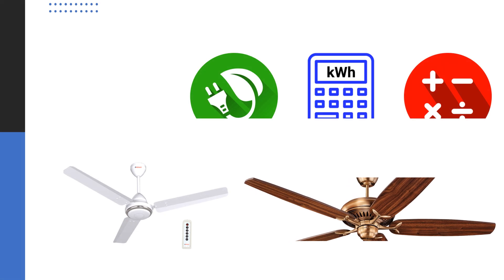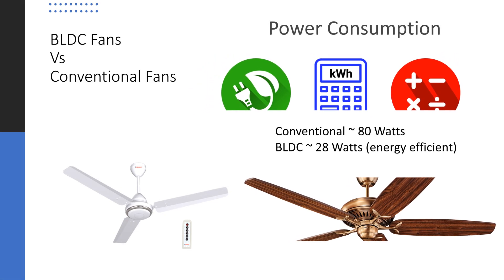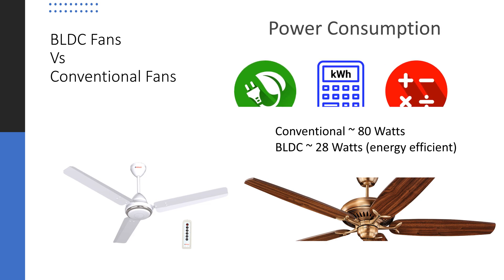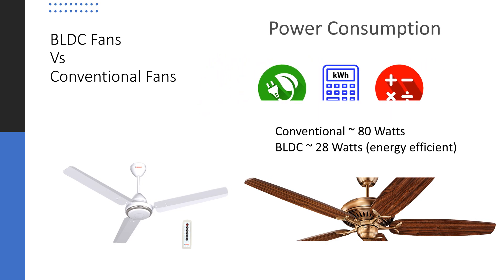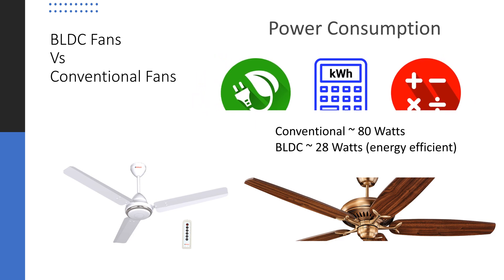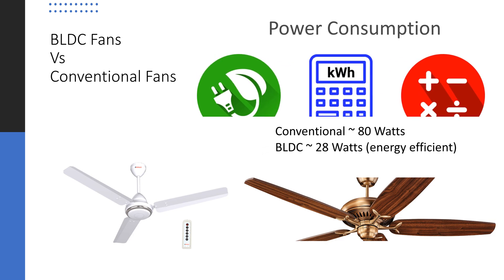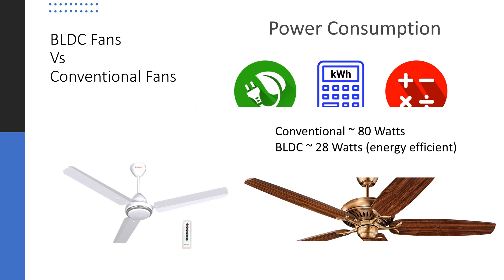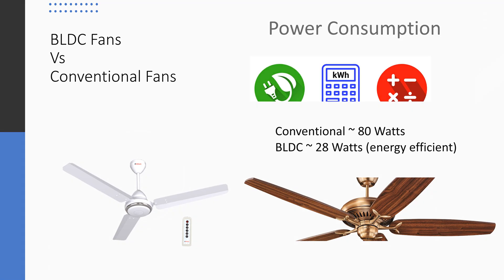Power consumption. Conventional fans consume 80 watts on average, which results in large electricity bills, making it expensive. BLDC fans on the other hand consume approximately 28 watts, which results in a more energy efficient option. A 28 watt BLDC fan saves almost 60 percent of the power.